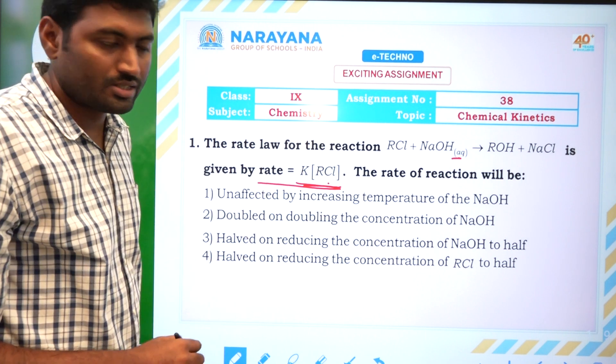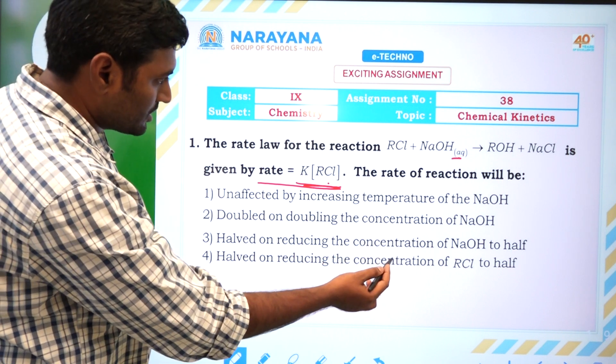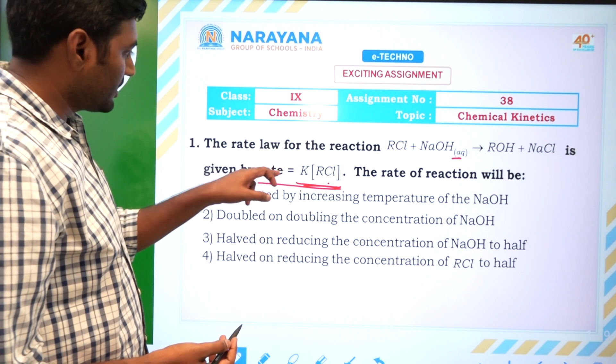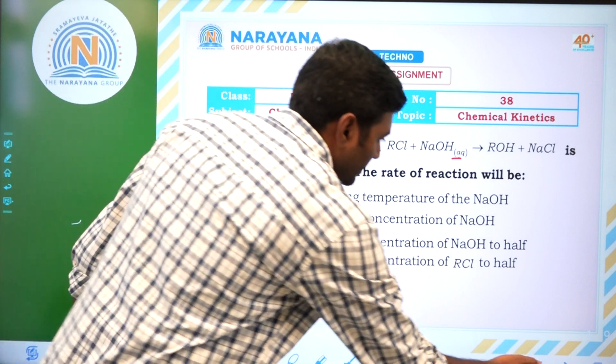Why? Because they are directly related. Hence, if we halve the concentration of RCl to half, the rate of the reaction is also halved. Hence, answer is the fourth one. We will go to the next question.